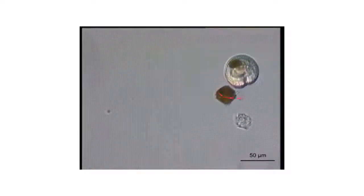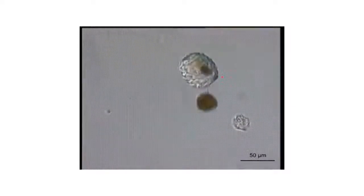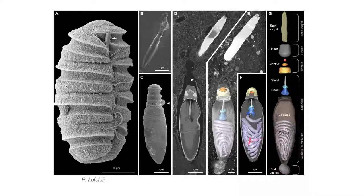It's hypothesized that after attaching to prey using this taniocyst towline, the dinoflagellate then launches this tubule, which is injected into the prey and injects some kind of toxins.